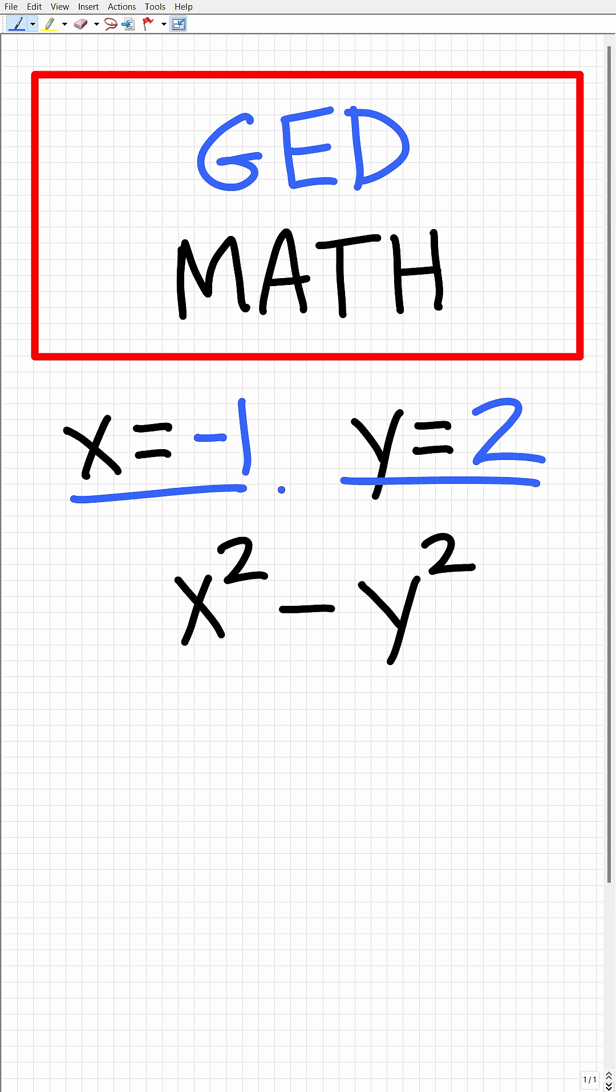x is equal to -1 and y is equal to 2, so we're going to replace x and y with these respective numbers. Now the main thing to remember here is to always use parentheses when you plug in these numbers into these variables.